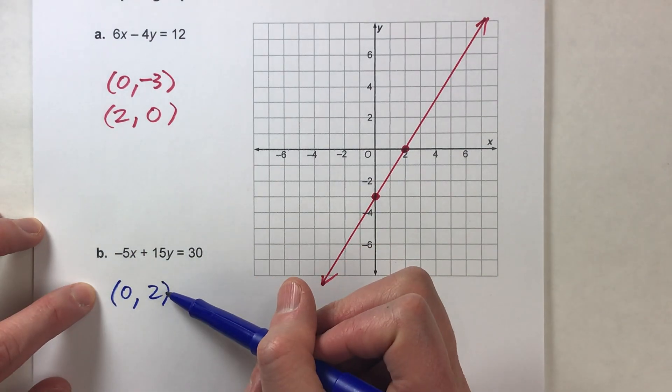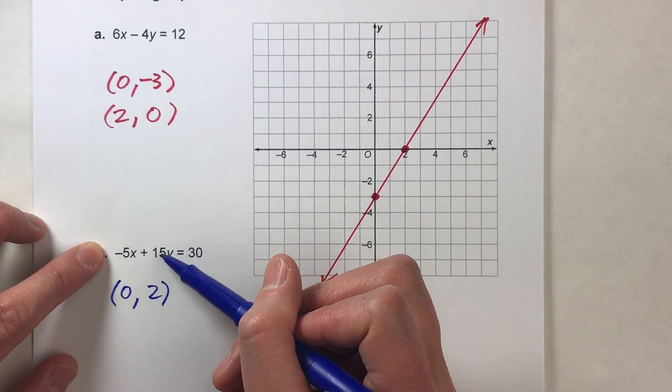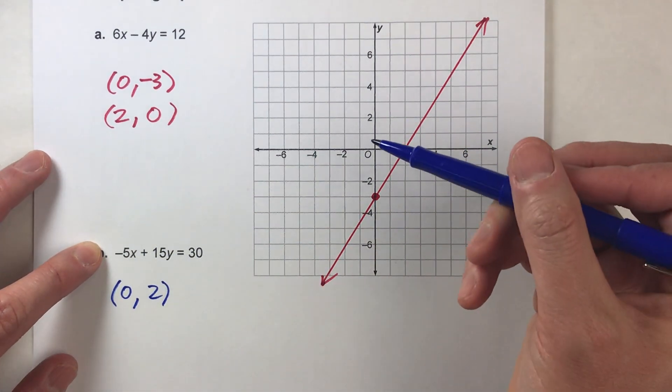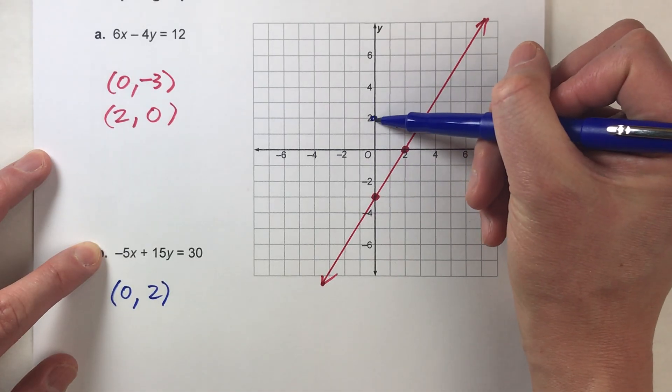We found our first combination of an x and y that make this side of the equation equal, in this case, 30. So zero, two, so it's right there.